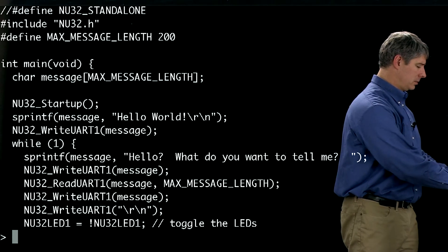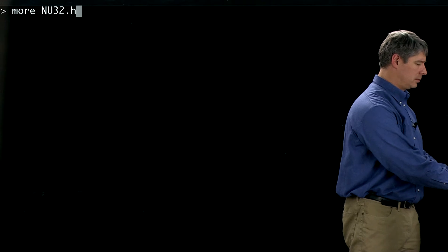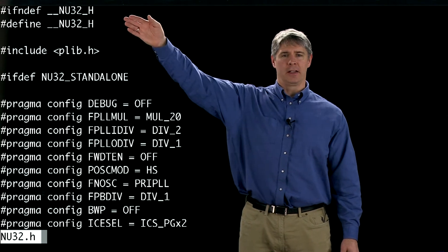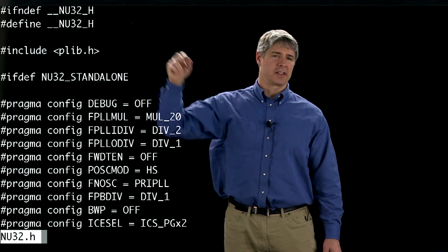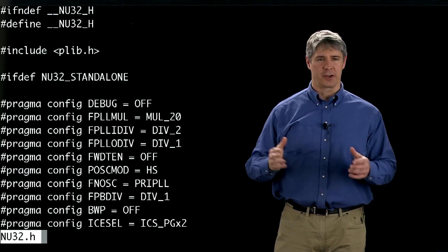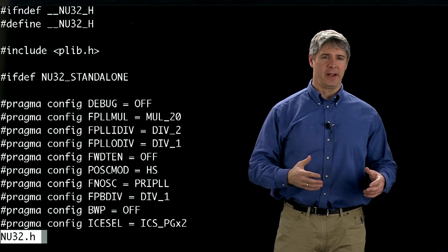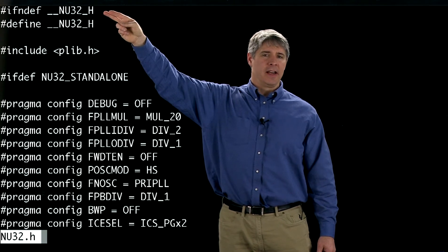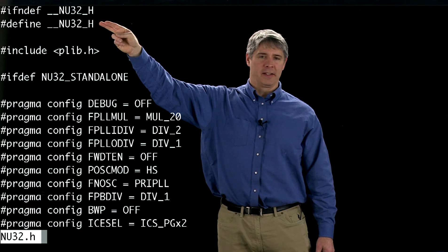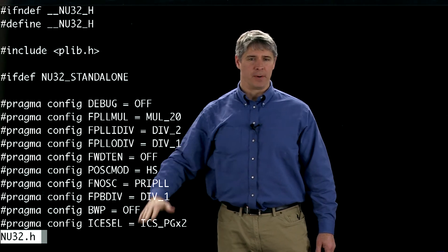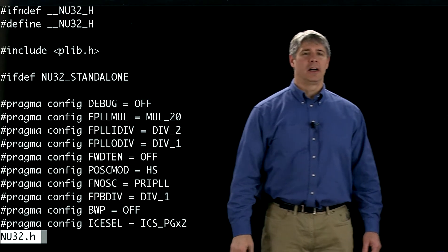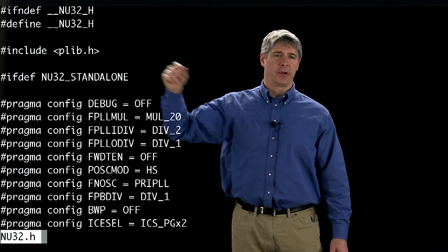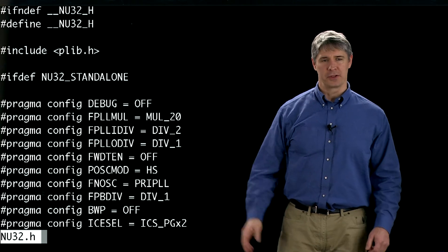If we take a look at the header file, at the top of nu32.h is an include guard. The first thing it does is check to see if this file has already been included in the current compilation to object code, because if it has, you don't want to include it again. It checks whether the constant NU32_H has already been defined; if not, it defines it. If it has already been defined, we jump to the bottom and do nothing inside this header file. Since it wasn't defined, we define it and continue. We include plib.h, the microchip library, and we'll see why we need that in just a moment.